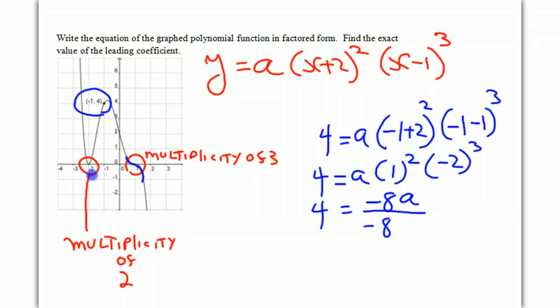Divide both sides by negative 8. We get a is equal to negative 4 eighths, which if we reduce is negative 1 half.